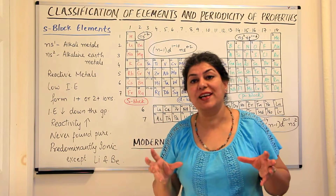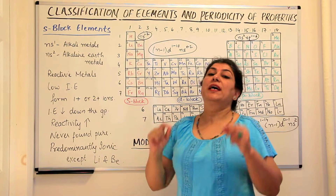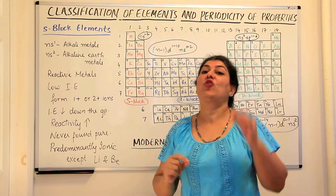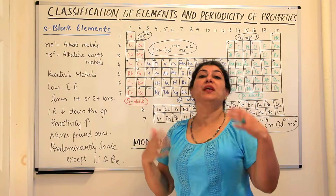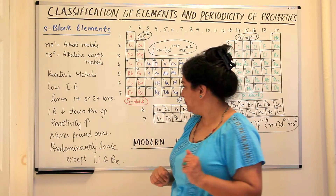Why the s-block? Because in these groups it is the s-orbitals which are being filled up.